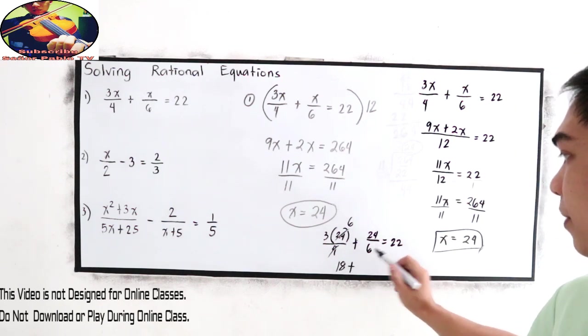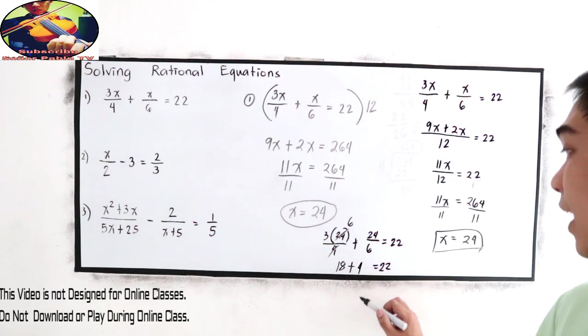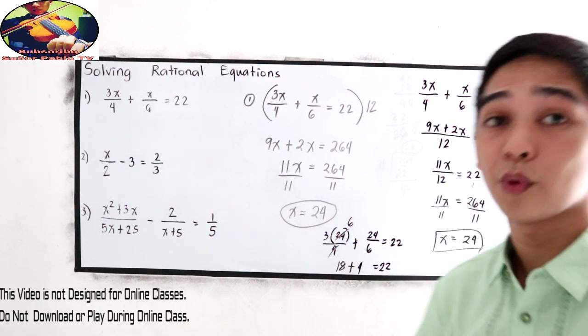Plus 24 divided by 6, that's 4. It's equal to 22. So 18 plus 4, that is 22. It's equal to 22.